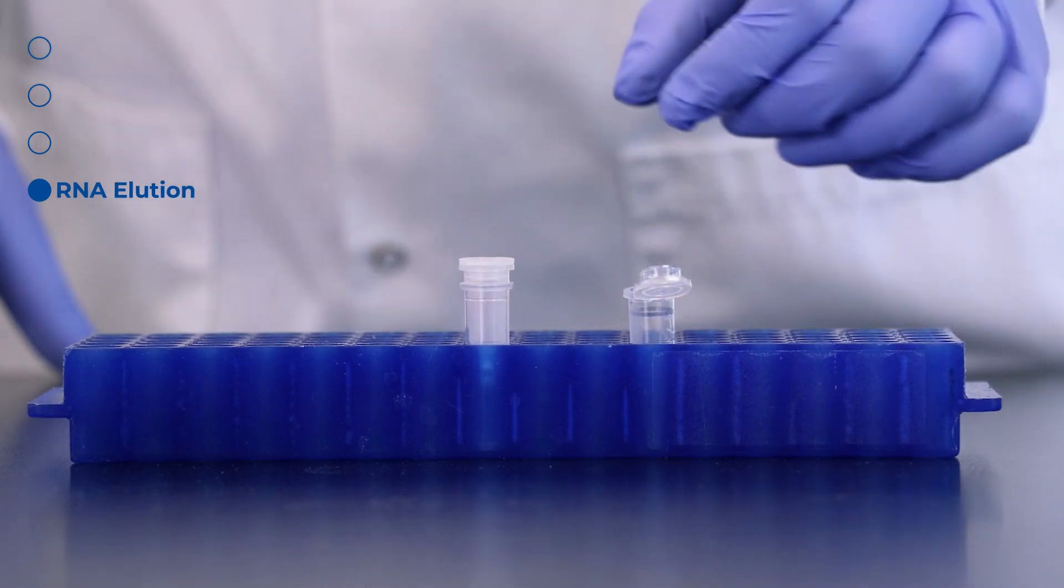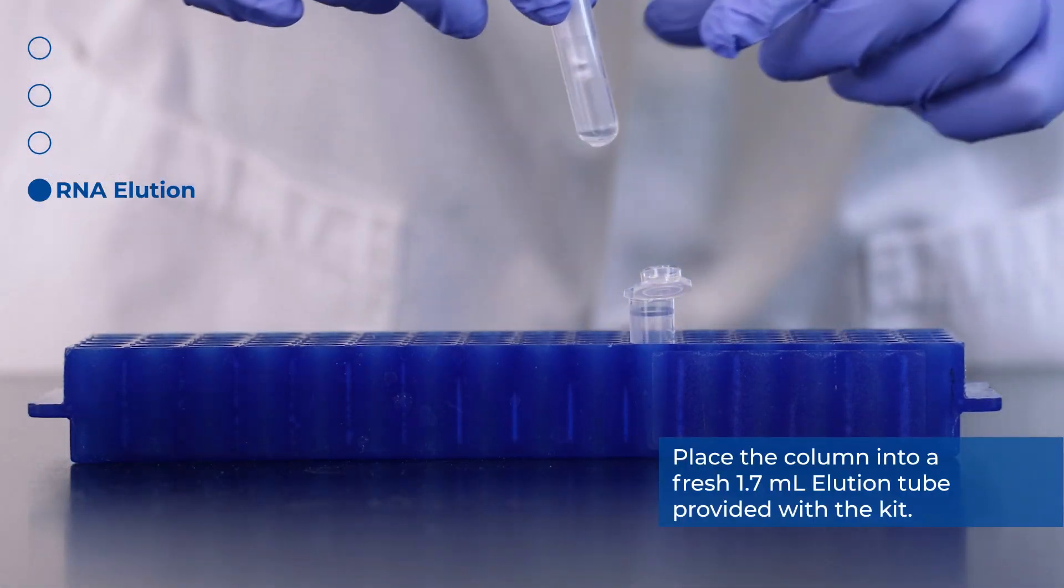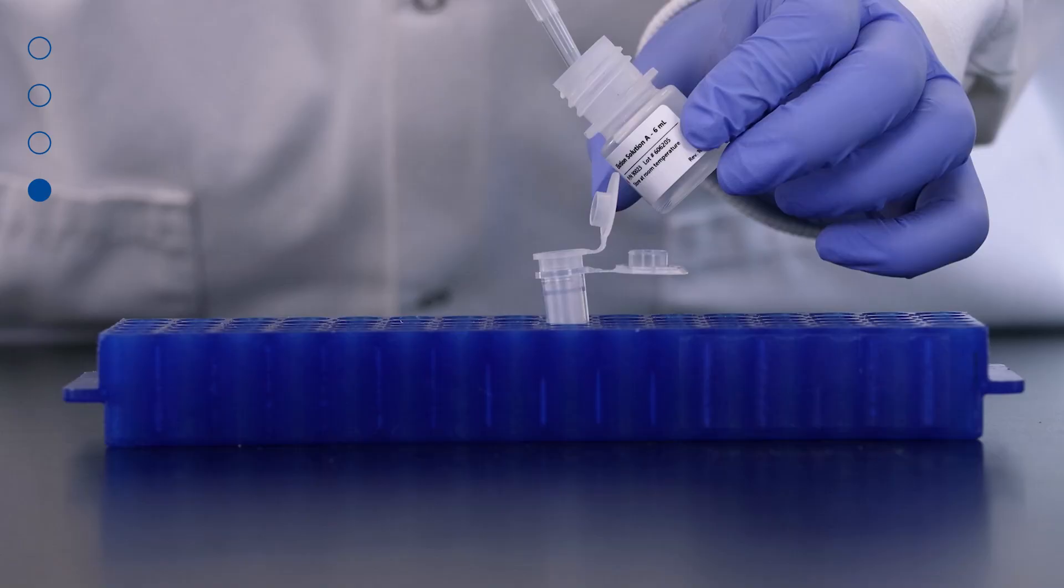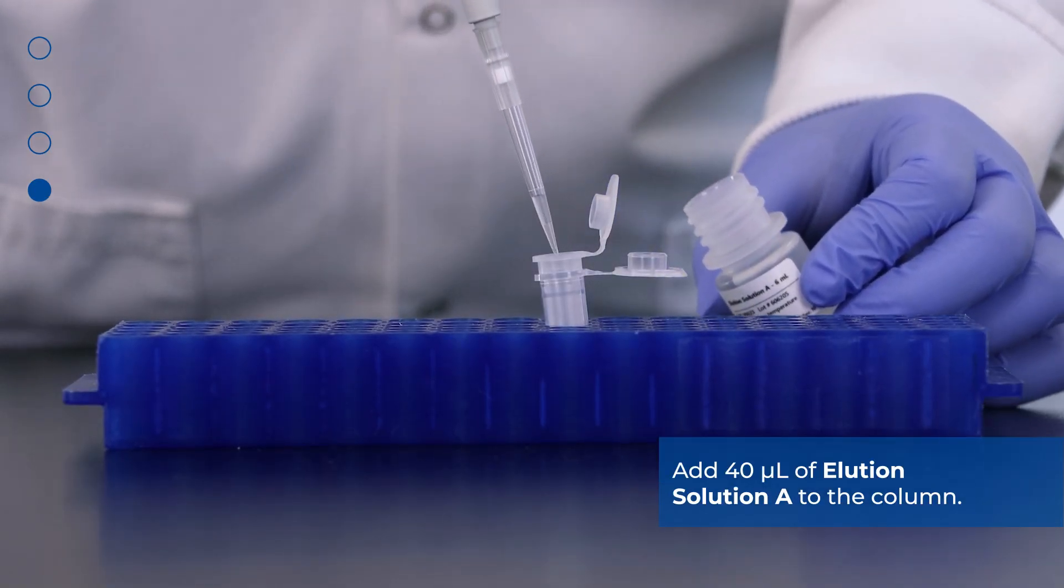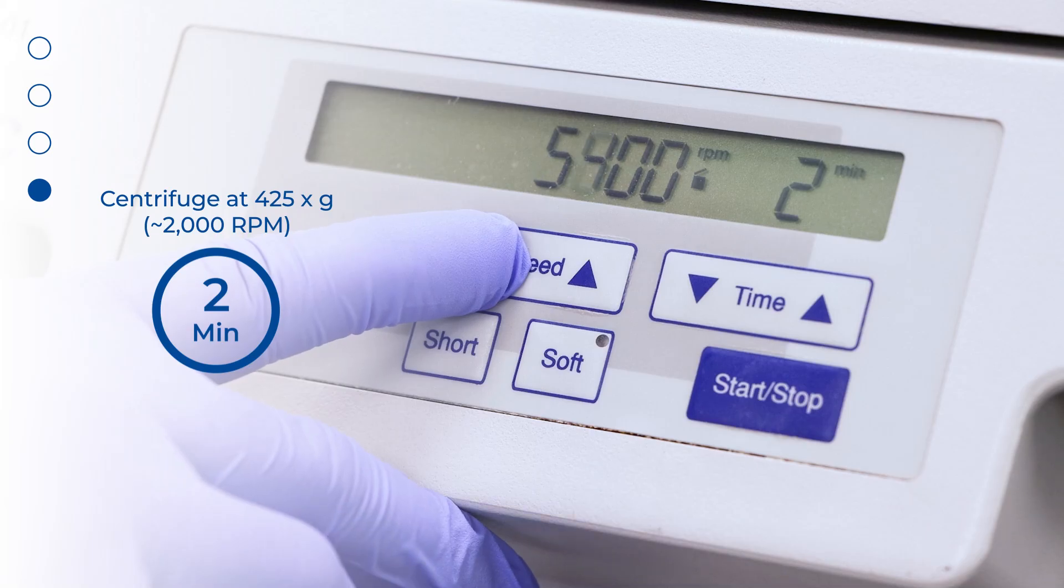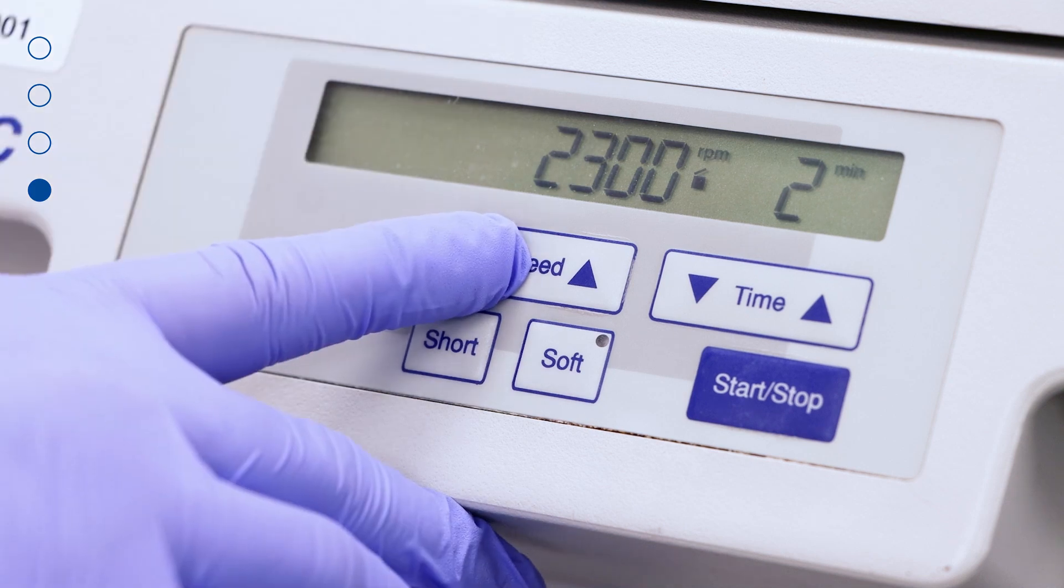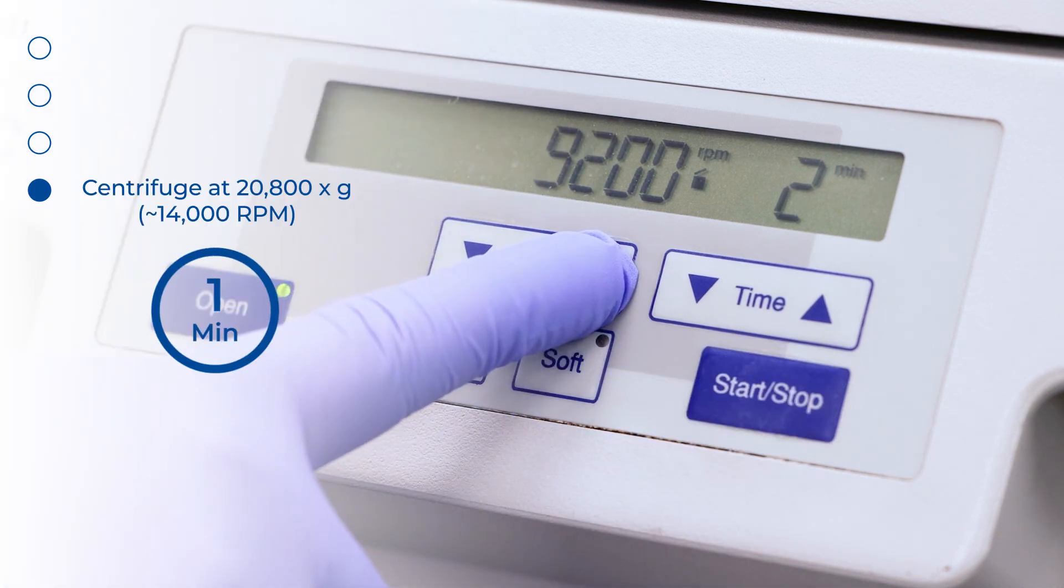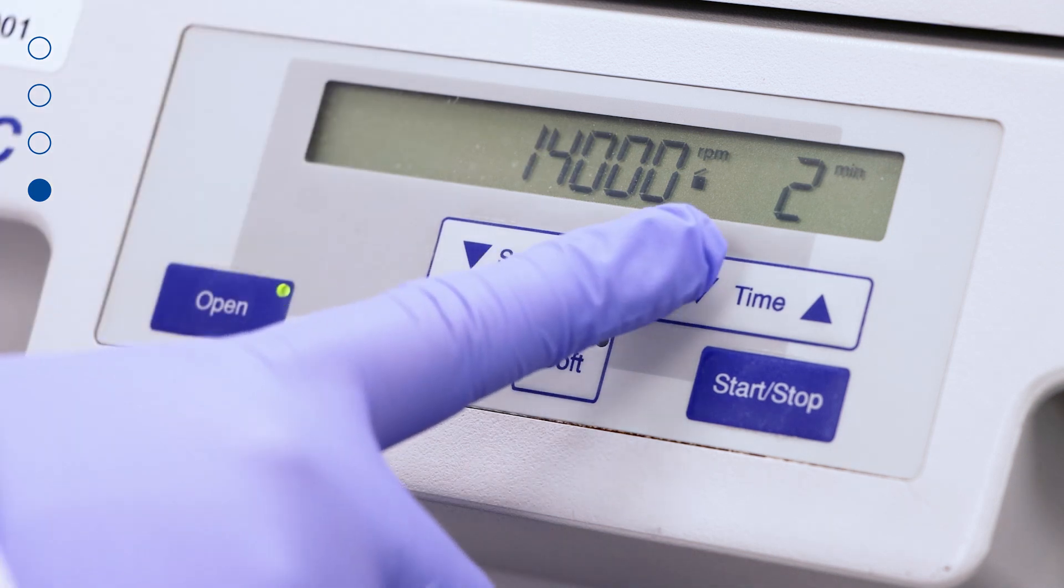Finally, we will elute the RNA. Place the column into a fresh 1.7 milliliter elution tube provided with the kit. Add 40 microliters of elution solution A to the column and centrifuge for 2 minutes at 425 g or 2000 rpm, followed by 1 minute at 20,800 g or 14,000 rpm.